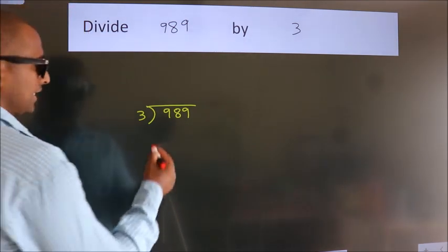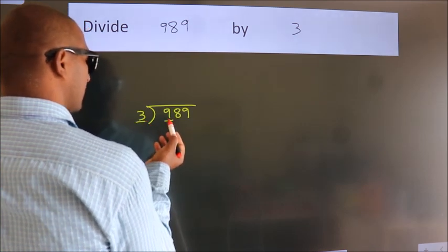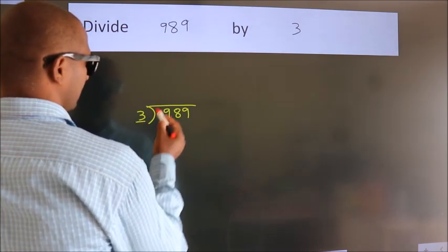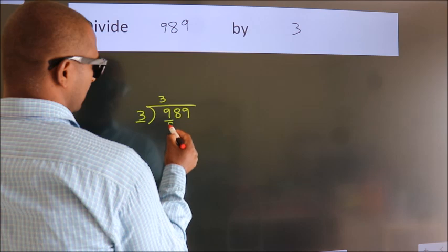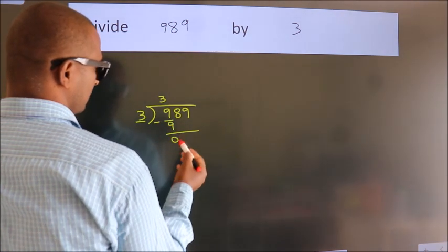Next. Here we have 9, here 3. When do we get 9? In 3 table, 3 threes, 9. Now, we should subtract. We get 0.